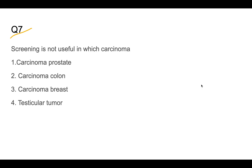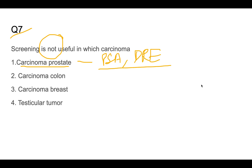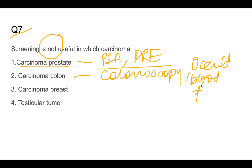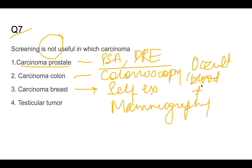Question number seven: screening is not useful in which carcinoma? For carcinoma of the prostate we use PSA and digital rectal examination. For carcinoma colon, colonoscopy, occult blood testing, and fecal DNA testing are used. For carcinoma breast, self-examination and mammography are used. For testicular carcinoma, apart from one or two markers, screening is not very useful — the answer is testicular carcinoma.